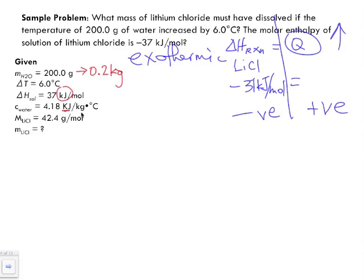The reason for the unit conversion: the delta H is given in kilojoules, so we want c in kilojoules per kilogram. To convert joules to kilojoules there are 1000 joules, and to convert grams to kilograms there are 1000 grams — it's a one-to-one ratio. So if your units are joules per gram, just add 'k' to both. We also have the molar mass of lithium chloride as 42.4 grams per mole.